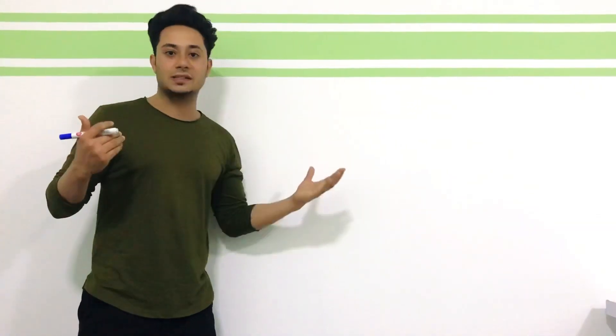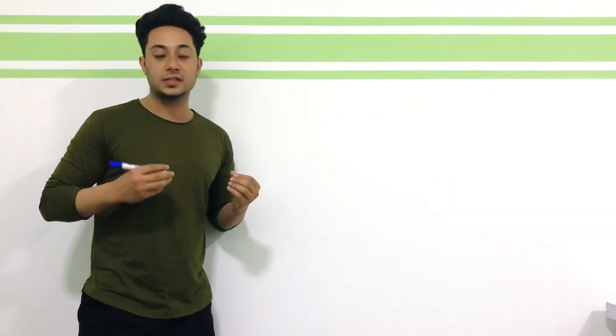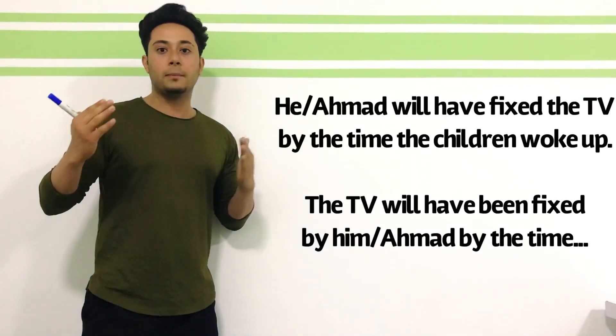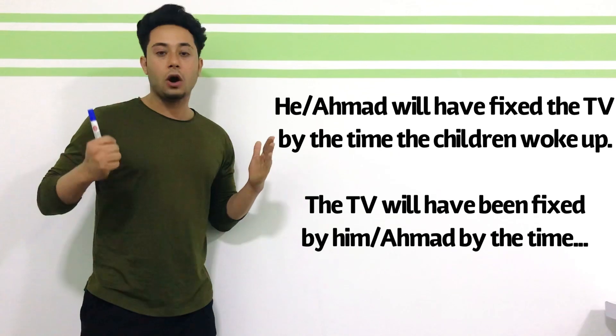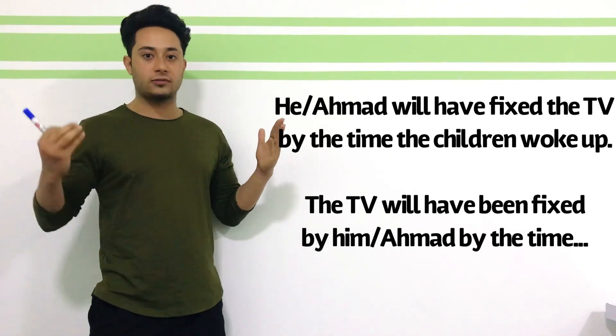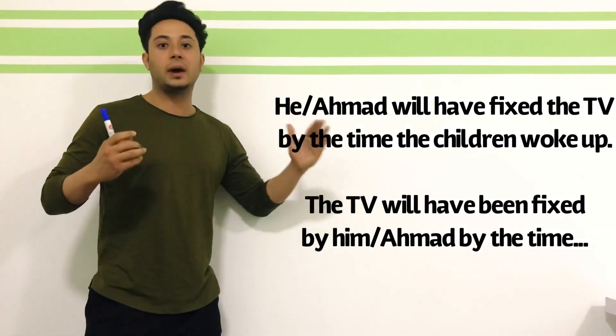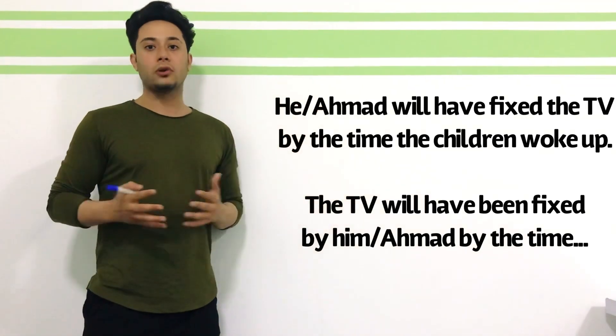Let's change the second sentence from active voice to passive voice. Ahmed will have fixed the TV by the time the children wake up. You can change it from active to passive voice like this: The TV will have been fixed by Ahmad or by him by the time the children wake up.